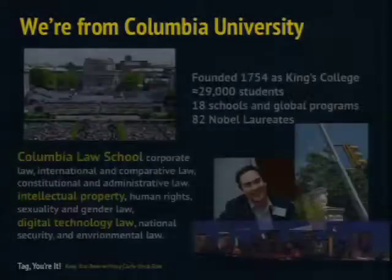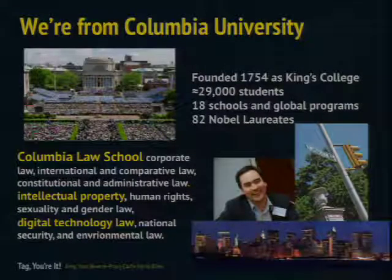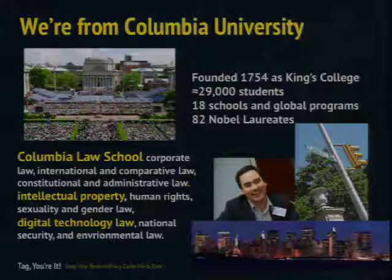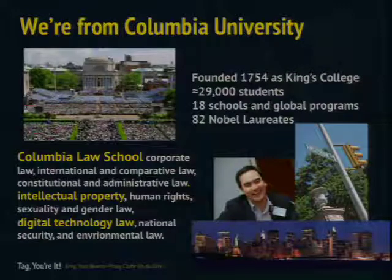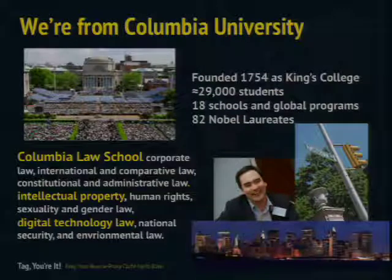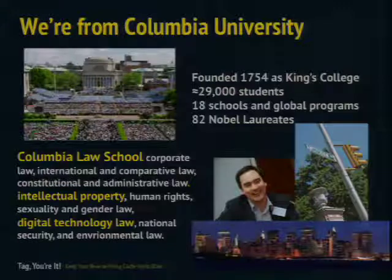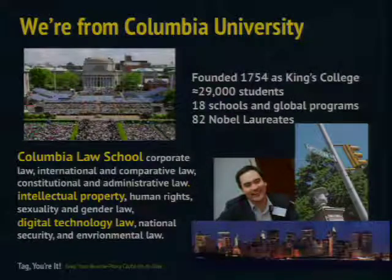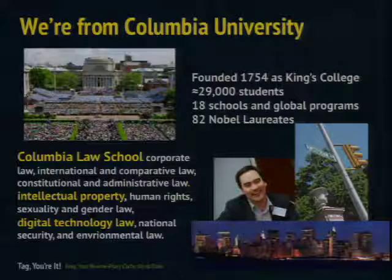Christian and I are from Columbia University, one of the world's great universities in New York City, founded in 1754, originally called King's College. Then we had a little revolution and the school was renamed to Columbia, which means New America. Columbia has about 29,000 students, 18 schools, and boasts the largest number of Nobel laureates of any university at 82. We actually work for Columbia Law School, which has expertise in many areas of law, including intellectual property and digital technology law. Pictured is Professor Tim Wu, who coined the term net neutrality, and Eben Moglen, a very dynamic advocate for the open source movement.